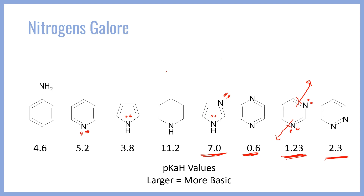Why is pyridazine more basic than pyrimidine, even though its nitrogens are closer and the inductive effect should be stronger? There is another effect at play: lone pair-lone pair repulsions. When two lone pairs are so close to one another, their partial negative charges create an electrostatic, coulombic repulsion that destabilizes their proximity. If we protonate one of those lone pairs, it alleviates the electrostatic repulsion, and the adjacent lone pair actually stabilizes the proton a little due to its negative charge density. So pyridazine is more basic than pyrimidine because the close lone pairs repel each other, actively favoring protonation at one of the sites.